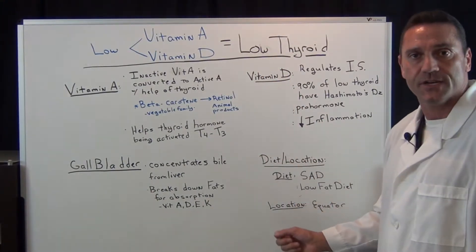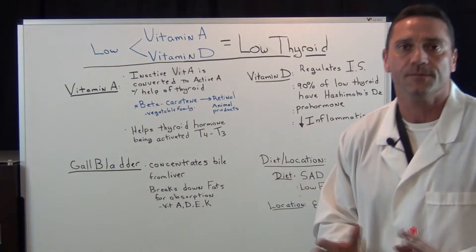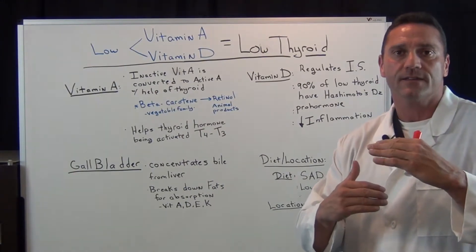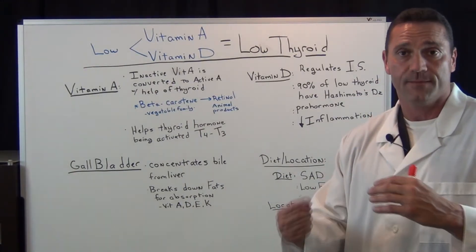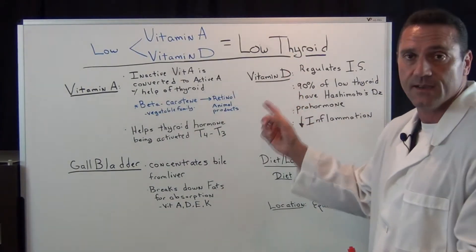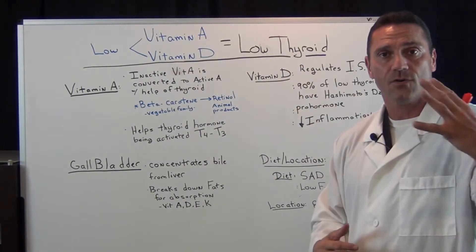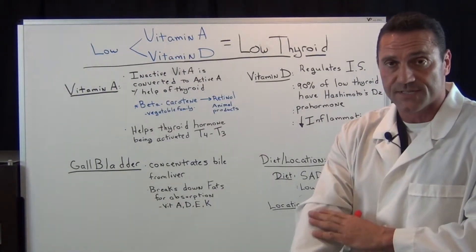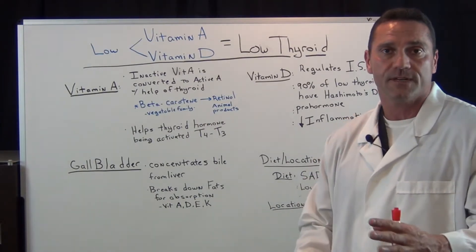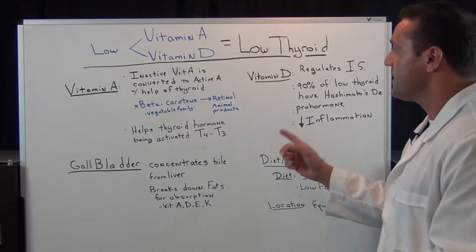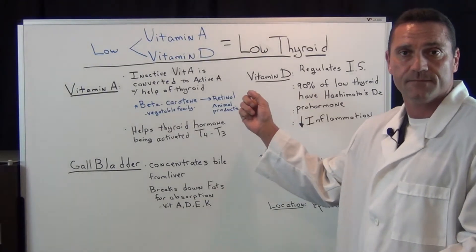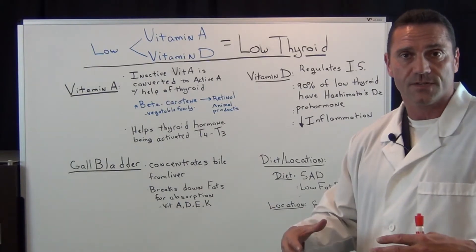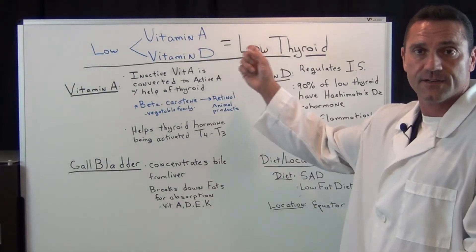Another factor is location. Statistics have proven that the closer you are to the equator, the more natural vitamin D and vitamin A you get. We get vitamin D from the sun, so if you live further north or south of the equator, you get less sunlight. Vitamin D is absorbed through the skin, and during the winter months we're not outside much. So unless you're supplementing with vitamin D, you're not getting enough — and low vitamin D levels will affect the thyroid.